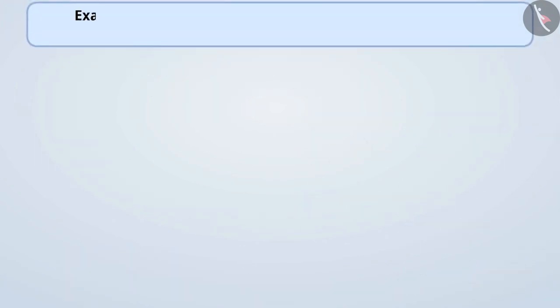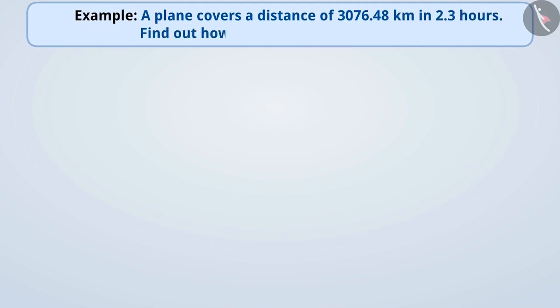Next example. A plane covers a distance of 3076.48 kilometres in 2.3 hours. Find out how many kilometres does it travel per hour.